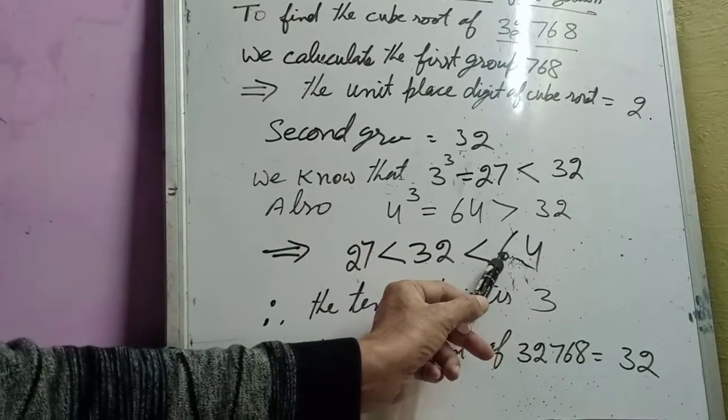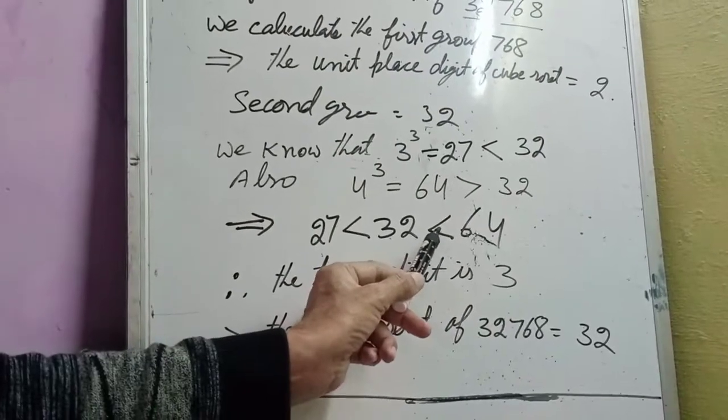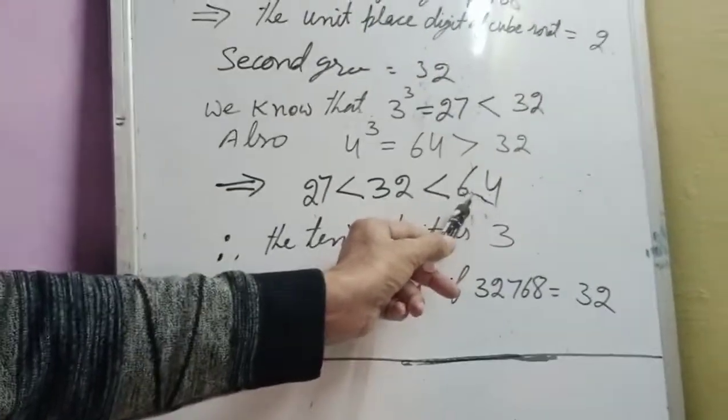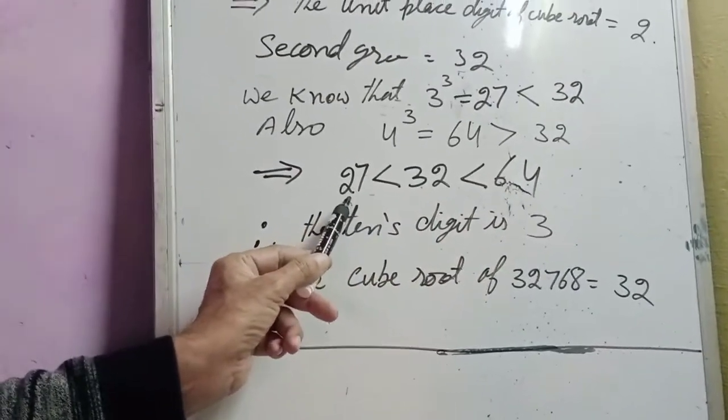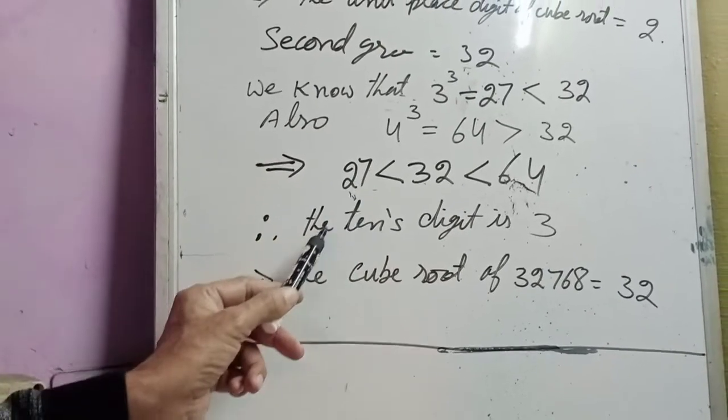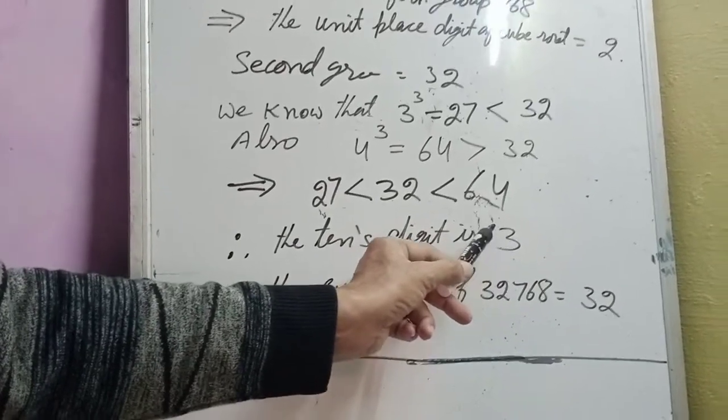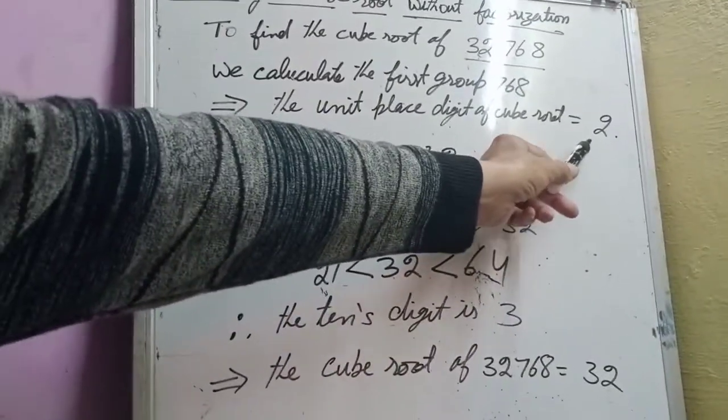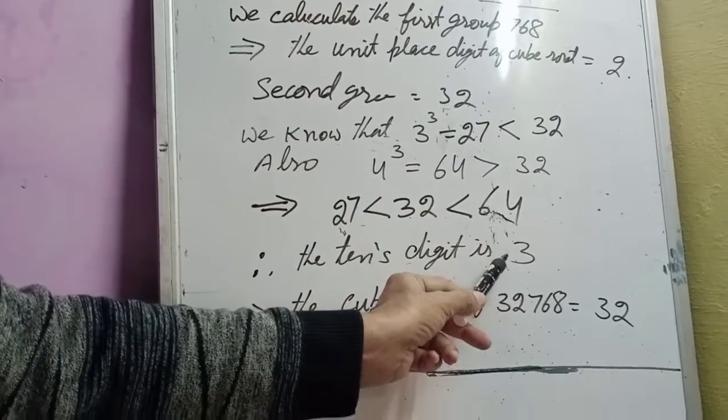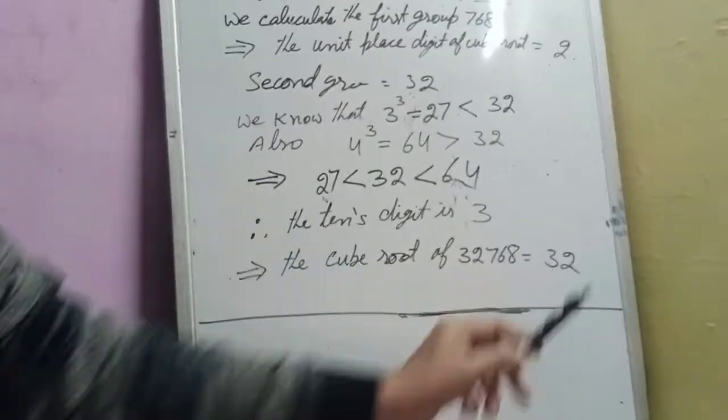64 is a cube of 4 and 27 is a cube of 3. Therefore the tenth digit will be 3. Now we have got the unit digit, we have also got the tenth digit, and therefore the cube root of this number is 32.